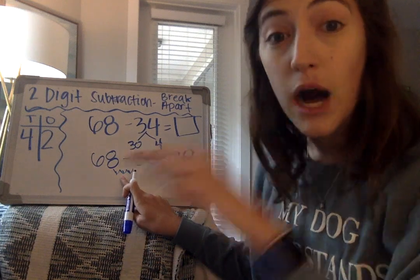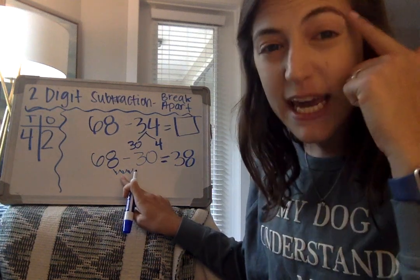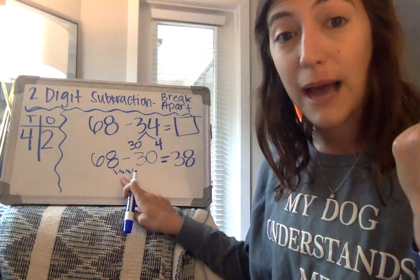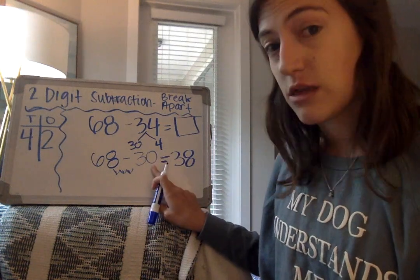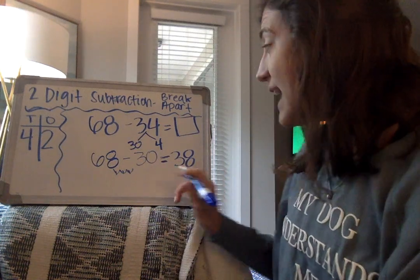Notice Ms. Alar made little humps or tally marks in her mind as she was going backwards so that she knew she subtracted 30. Now we have 38.